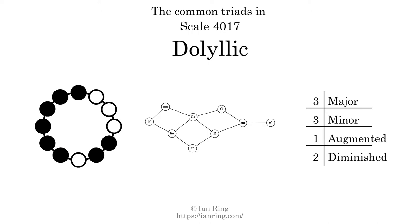Here is a Hamiltonian path of parsimonious voice leading that uses all the triads.